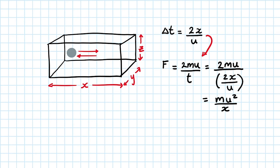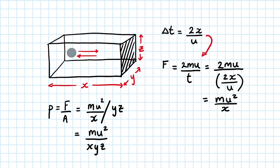But by definition, pressure is force over area. The cross-sectional area of this container is y times z. But the volume of this whole container of gas is equal to x, y, z. The equation for pressure now reduces to the mass times by the speed squared divided by volume.